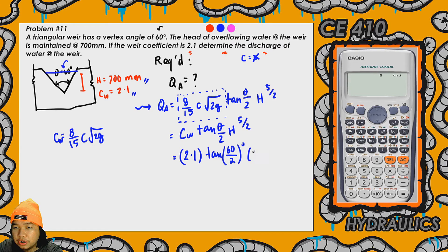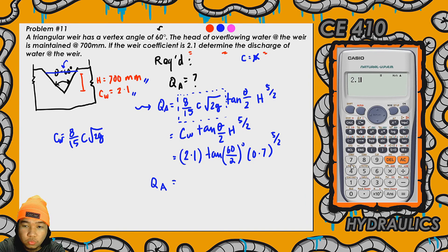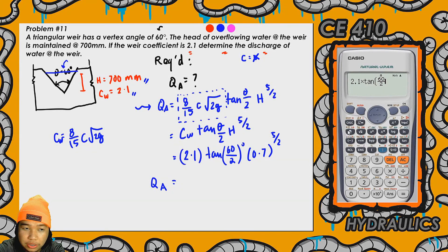Times h, so input natin dito yung in terms of meters raised to 5 halves. So automatically ang magiging answer natin dito is in terms of cubic meters per second. So input na natin sa calculator: that is 2.1 multiplied to tangent 60 over 2 - so yun naman ay 30, alam mo naman natin yun anyway input ko parin - then multiplied to 0.7 raised to 5 halves, so that's 5 over 2.